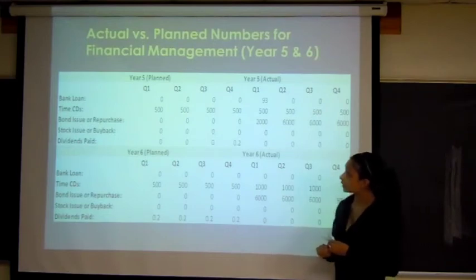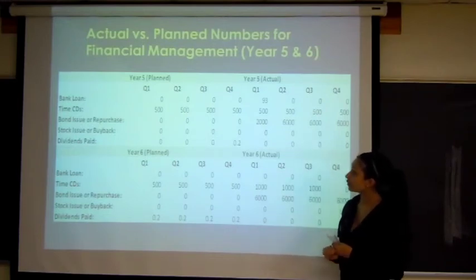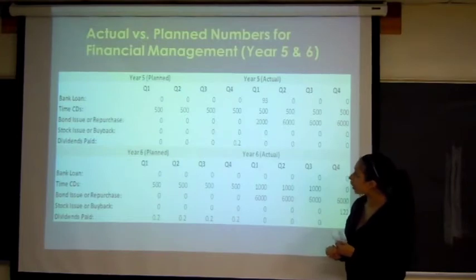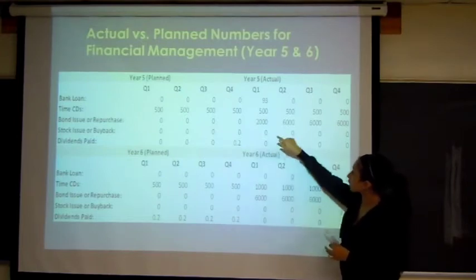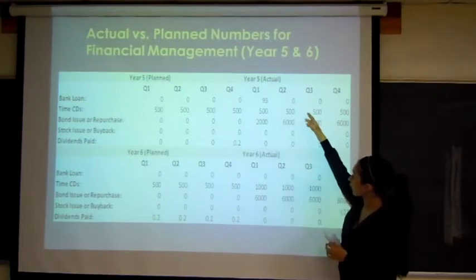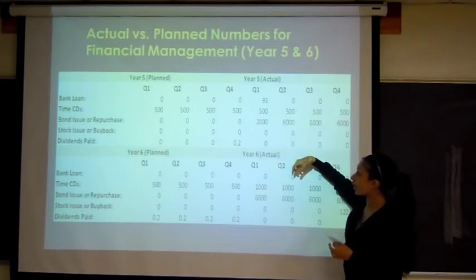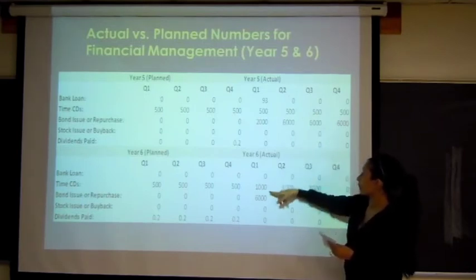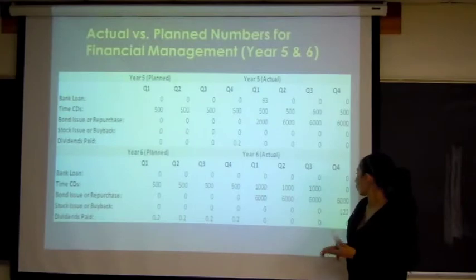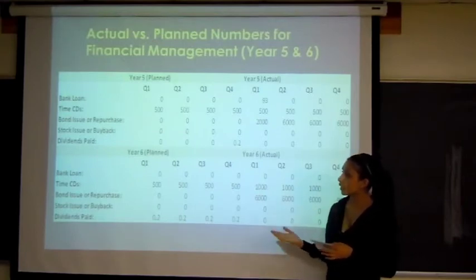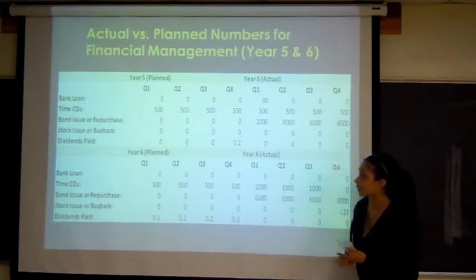Next, we're going to look at our time CDs. For years 5 and 6, we plan to invest $500,000 per quarter. Our plan matched our actual $500,000 per quarter. In fact, for year 6, we have decreased our time CDs to $1 million per quarter, quarters 1 through 3. We chose to invest in time CDs because they have a high yield and low risk.